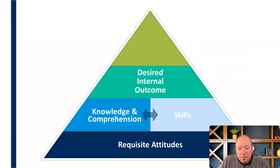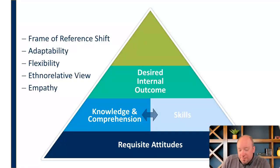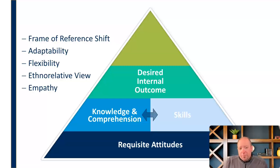Once we've done that, we can move on to thinking about the desired internal outcome. A lot of cultural competence happens just within us. We've got to have a shift in frame of reference — how we see and perceive the world in general — and get away from this idea of right and wrong and good and bad as it relates to culture. We need to get into this idea of 'different,' and understand that there are different ways to perceive things, approach things, and do things. We've got to have that shift and an appreciation for the frame of reference of other people.